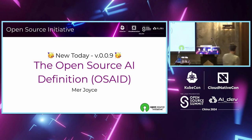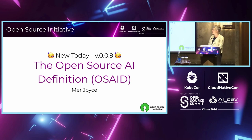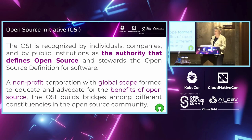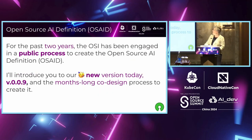I'm going to talk about the Open Source AI Definition and also announce our new version released today — version 0.09. The Open Source AI Definition is created by the Open Source Initiative, OSI, and I'm working for them. They are the authority that defines open source — they're a nonprofit with global scope, advocating for the benefit of open source. For the past two years, OSI has been engaged in a public process to create the Open Source AI Definition, or OSAID. I'll introduce the new version today and also talk about the months-long co-design process we used to create it.